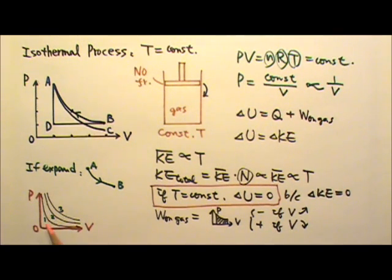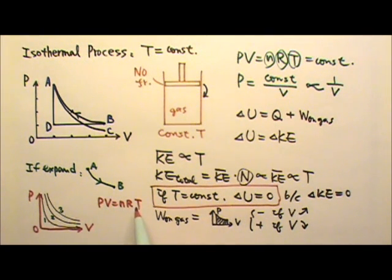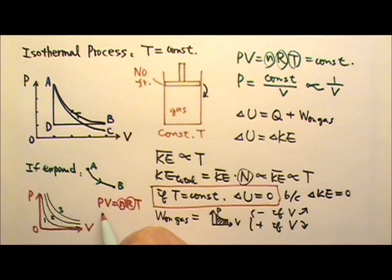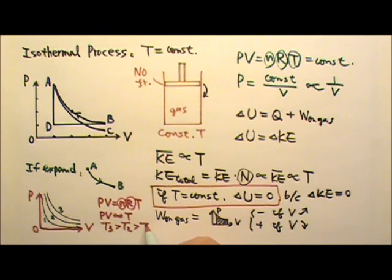Which one has the highest temperature and which has the lowest? Because PV equals nRT and for a closed system n and R are constants, P times V is proportional to temperature. So we can compare temperatures by comparing P times V. The curve with the highest P times V has the highest temperature. So T3 is the highest, then T2, then T1, because T3 has the highest P times V and T1 has the lowest.